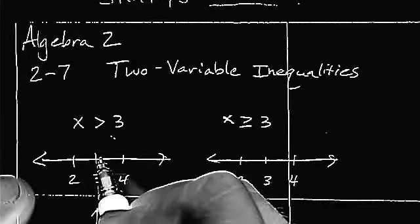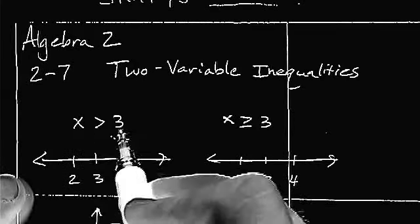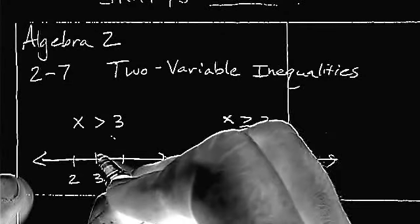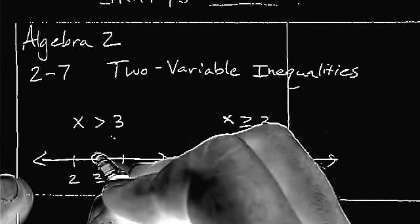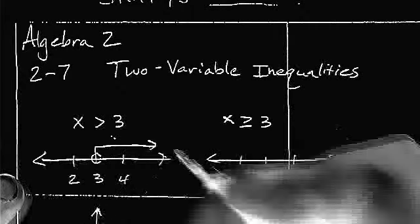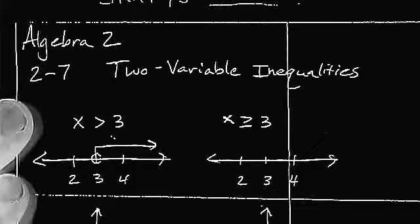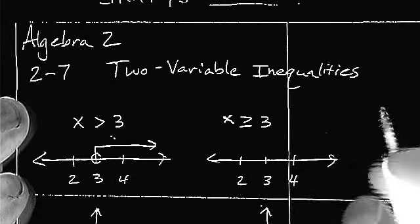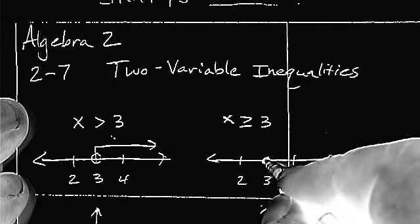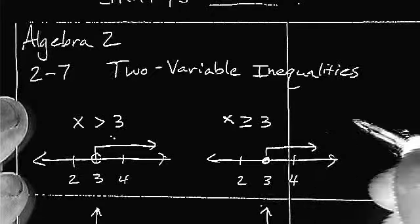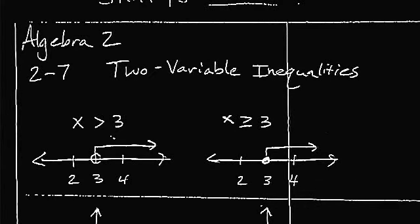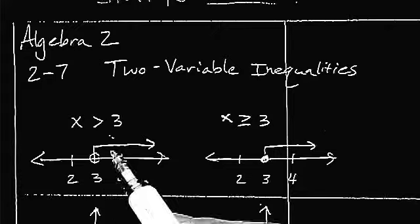In a one variable situation, when I ask you to graph x is greater than 3, you would probably put an open circle on 3 and your arrow would go to the right. Or if it was greater than or equal to 3, you would have a closed circle and an arrow to the right, indicating all the values bigger than 3. This one includes 3, this one does not.